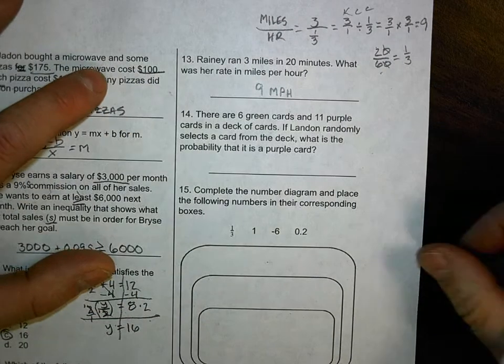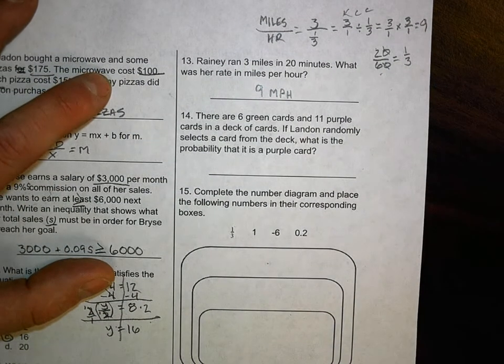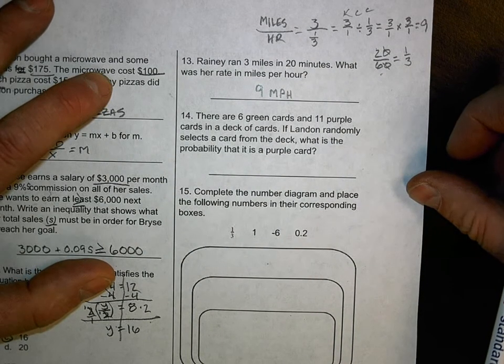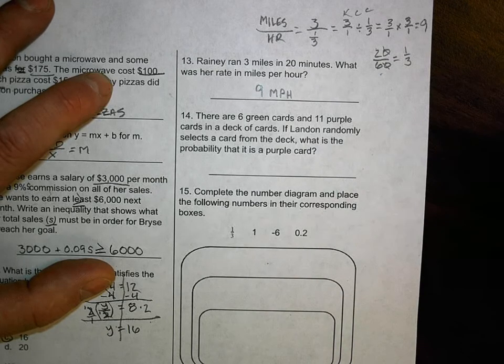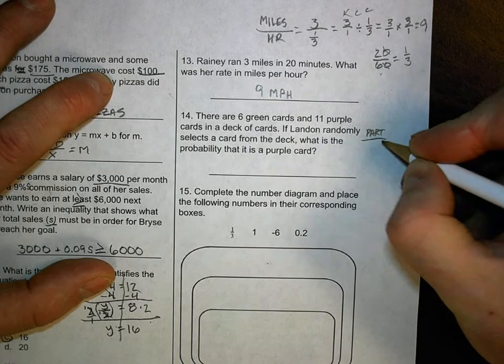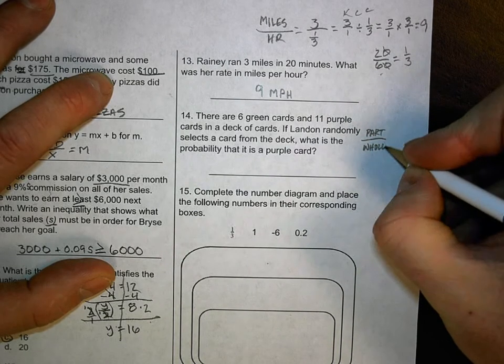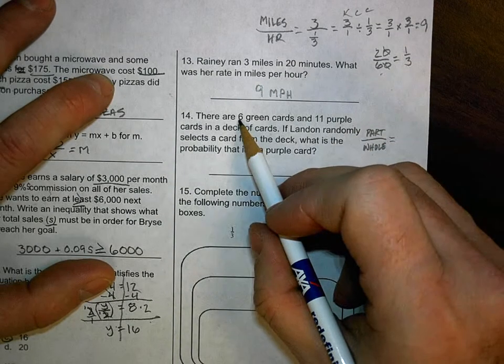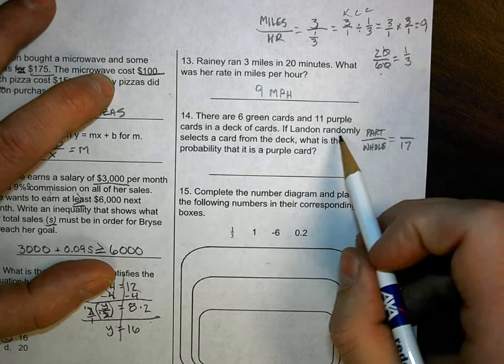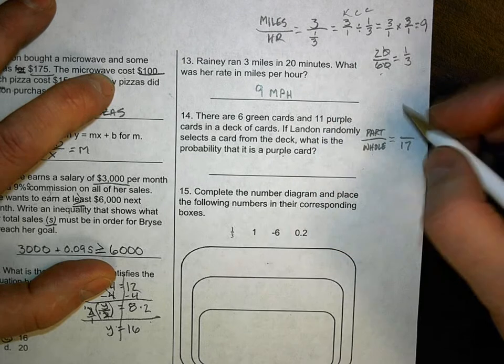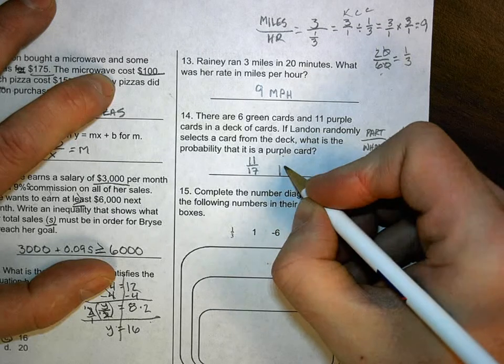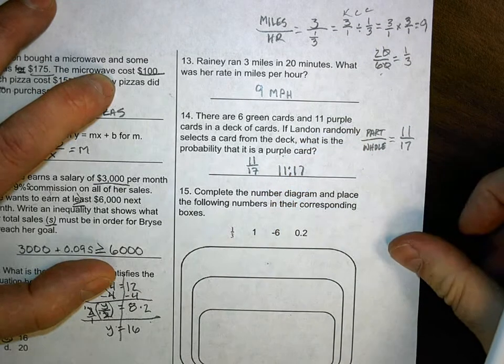All right, let's look at number 14. So number 14 says there are 6 green cards and 11 purple cards in a deck of cards. If Landem randomly selects cards from a deck, what is the probability of a purple card? Okay, so probability, we need to look at the part over the whole. And the people in the room don't realize I'm recording, so they're talking. So now they're not. So part over whole. Well, our whole, we've got to add the total number of cards. We've got 6 cards plus 11 cards, which is 17 cards. And we want to know if you randomly, what is the probability of a purple? Well, there's 11 purple. So the probability is 11 and 17. You could write that as 11 and 17. You could write it as 11 to 17. You could even figure out the fraction, but that's way too much work for me.